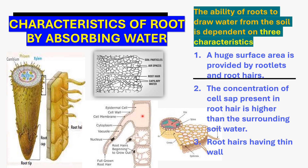Here you can see the structure of a root hair. The cell sap is present inside the vacuole. The solute concentration of the cell sap inside the root hair is higher than the concentration of the surrounding water outside the root hair.